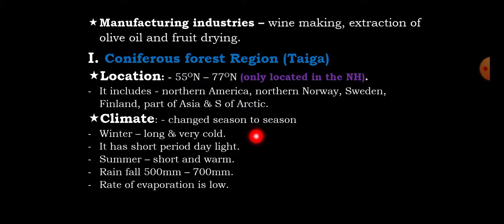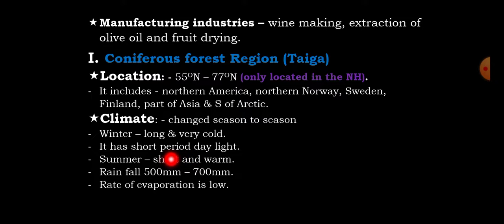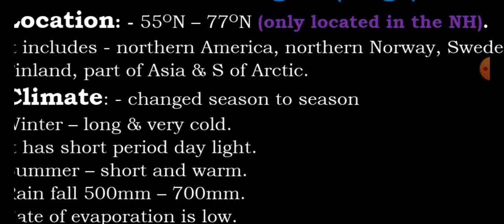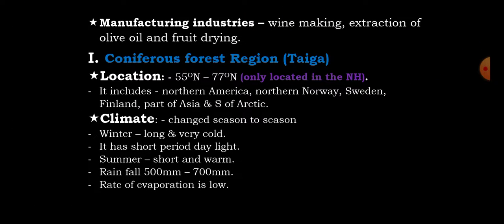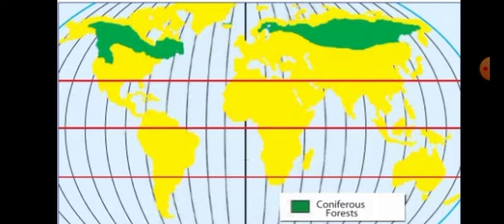The climate changes from season to season. Winter is long and very cold, while summer is short and warm. Winter has a short period of daylight and summer has a long period of daylight. Rainfall ranges from 500 to 700 millimeters. The rate of evaporation is very low in the Coniferous Forest region due to the low angle of the sun.